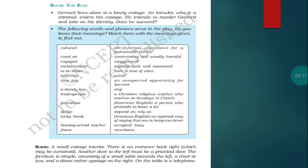This play is about a playwright named Gerard — playwright spelling P-L-A-Y-W-R-I-G-H-T. How he escapes being killed by an intruder who wants to steal his identity and live peacefully. Gerard fools the intruder, confines him in a cupboard, and finally hands him over to the police. That's the story — he escapes from the intention of the intruder.